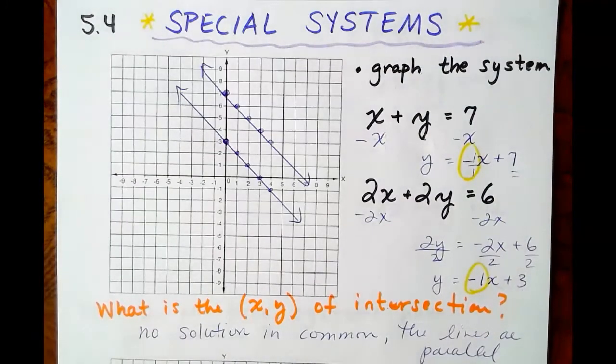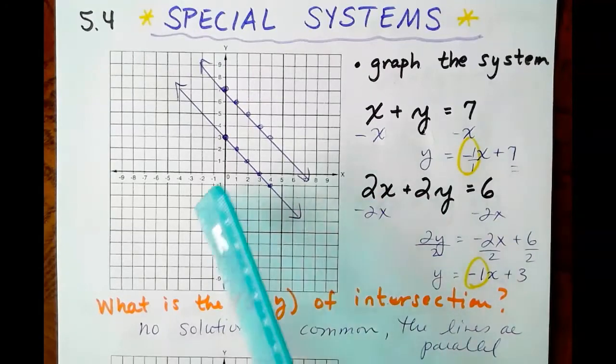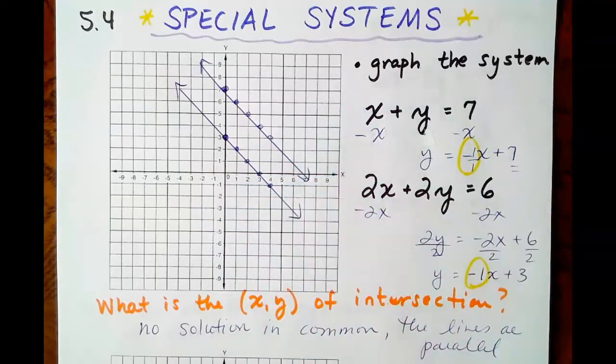If the lines are parallel, they're never going to intersect. By definition, lines that are parallel are in the same plane and do not have a point in common.